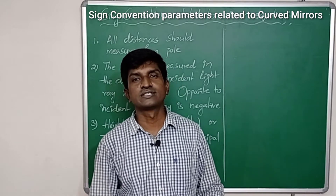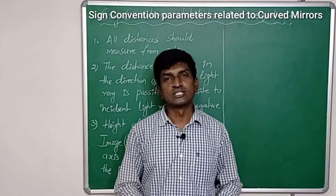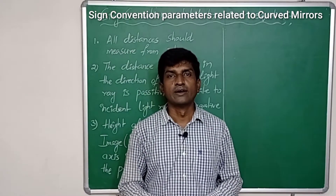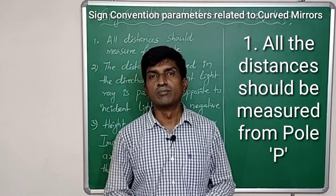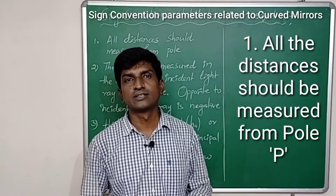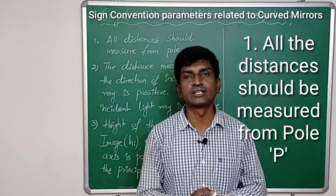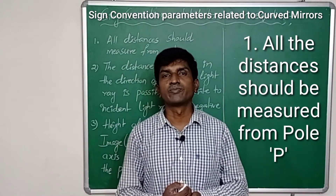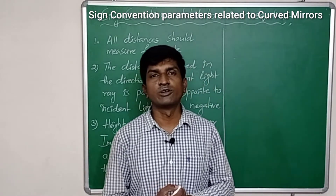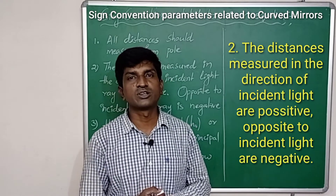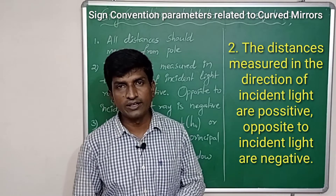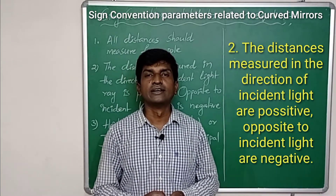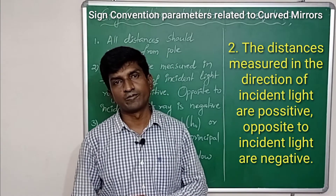Welcome. Let us discuss the sign conventions related to curved surfaces. These sign conventions are also applicable to curved lenses. The first one is: all the distances must be measured from the pole — whether the distance of object, distance of image, radius of curvature, or focal length. The second one is: distances measured in the direction of the incident light ray are taken as positive; opposite to that, values are negative.